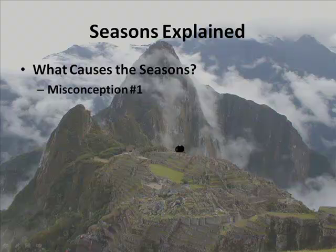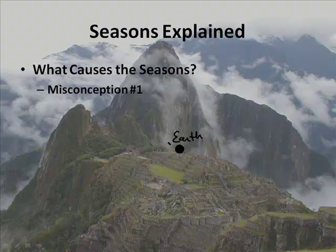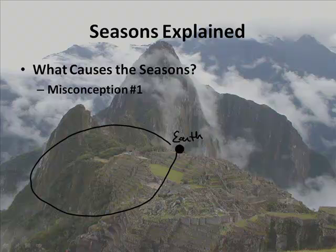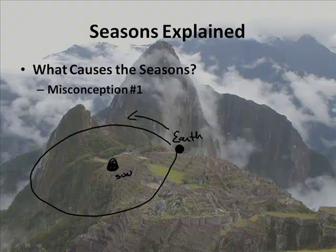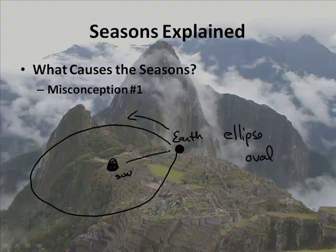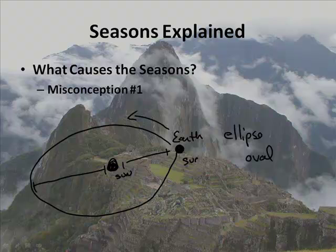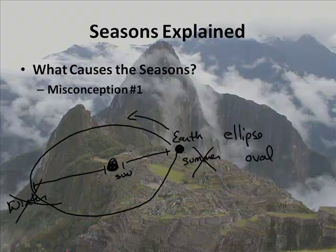If I draw a sphere representing the Earth, most of you know that the Earth revolves around the Sun. The revolution of the Earth around the Sun is what we call an ellipse — an oval. At some points it's actually closer to the Sun than at other times. A lot of people seem to think this is what causes the seasons — that when it's closer it would be summer, and when it's further away it would be winter. That is not correct; it's caused by something else.